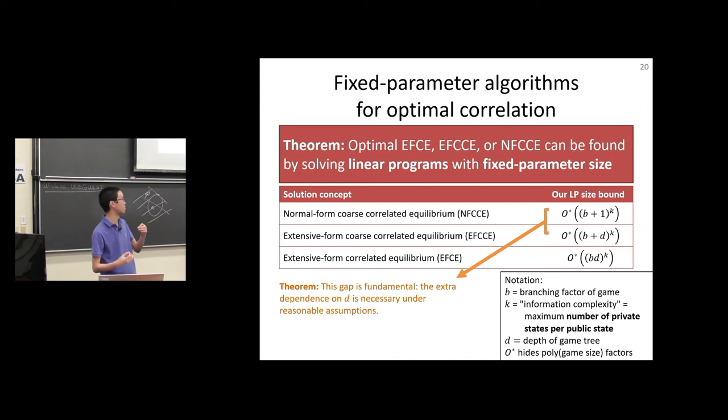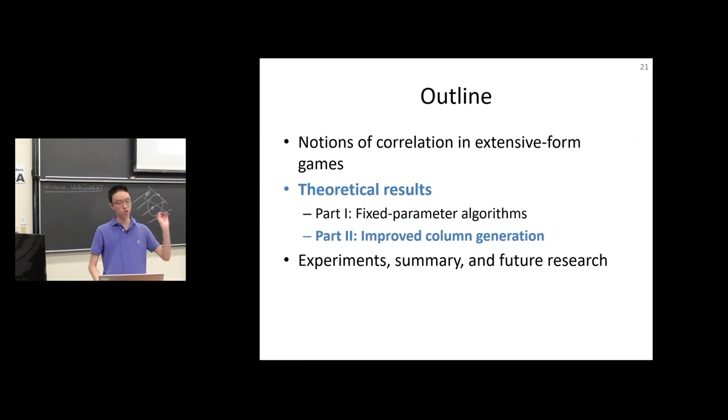Now I want to note that there is a fundamental difference between the first two bounds, this B plus 1 and this B plus D. In this B plus D to the k, there's this extra parameter D. You might ask, is it possible to get rid of this dependence on the depth of the game? Is it possible to have a bound for these last two cases that only depends on the branching factor and k? The answer is no. Under reasonable assumptions, this gap between these first two things, this addition of the extra parameter, is fundamental. We don't show that the parameter has to be the depth, but we do show that we cannot do it with only branching factor and k.